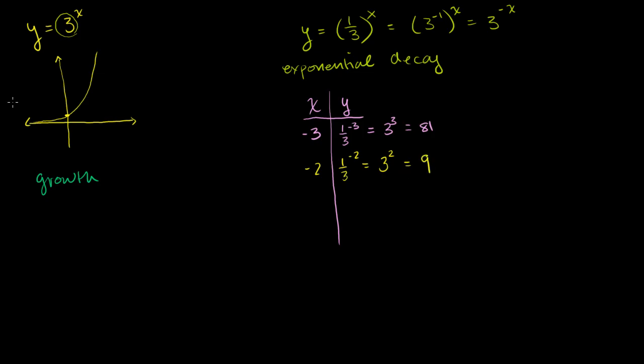And that is equal to 9. Oh, I got this one wrong up here. 3 cubed isn't 81, that's 3 to the fourth. 3 times 3 times 3 is 27. My brain is malfunctioning. What about when x equals negative 1? Then you have one-third to the negative 1 power, which is just 3.